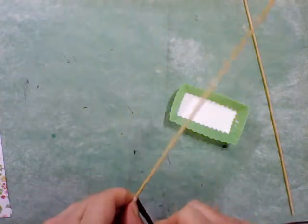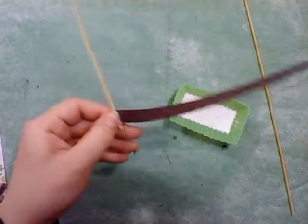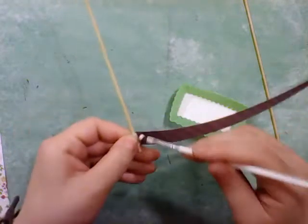Tighten it down really good because you want it to be even and straight, and then put a bit of glue on there.